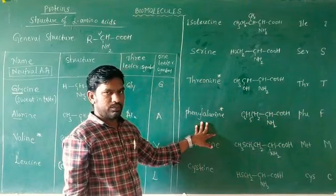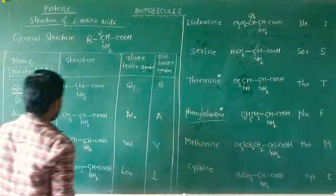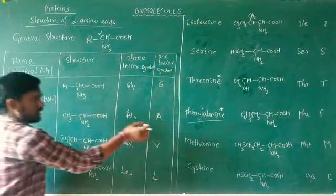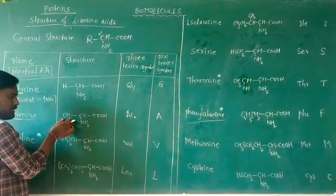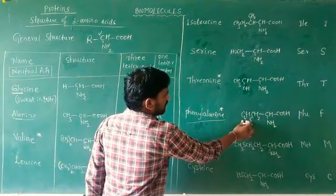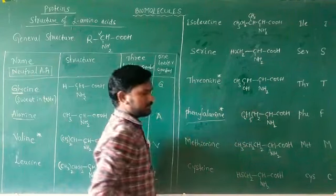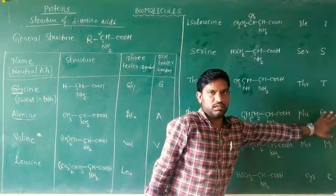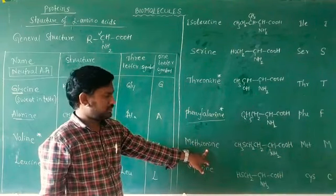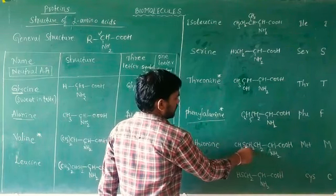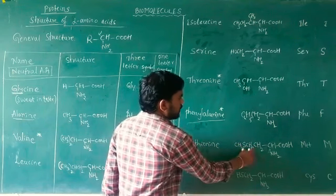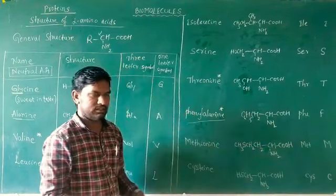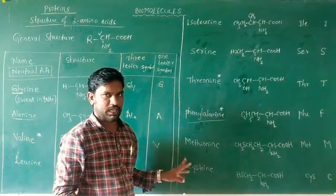Phenylalanine is also a neutral amino acid. Alanine has R as CH3, but in phenylalanine, one hydrogen in CH3 is replaced by a benzene ring — so it is called phenylalanine. Three-letter symbol is PHE and one-letter symbol is F. Methionine has R as a CH3-S-CH2-CH2- part; three-letter symbol is MET and one-letter symbol is M.